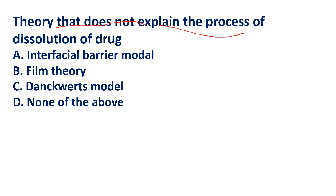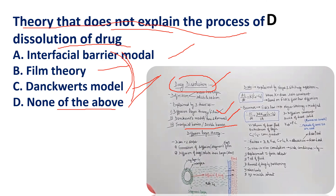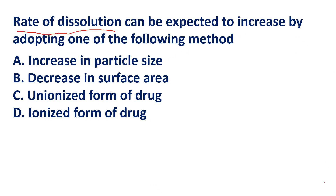Question: Which theory does NOT explain the process of dissolution? Options: Interfacial Barrier Model, film theory, Danckwerts model, none of the above. All three theories — diffusion layer theory (film theory), Danckwerts model (surface penetration and renewal theory), and Interfacial Barrier Model — explain dissolution. Therefore the answer is none of the above.